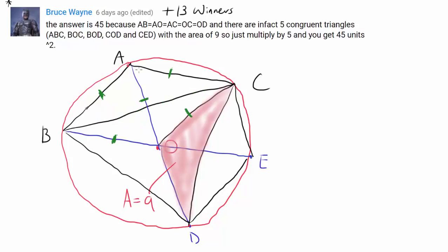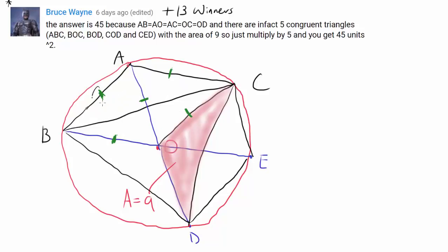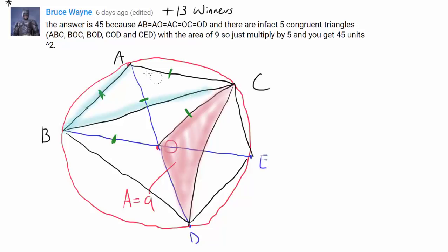Now do we have any congruent triangles? Yes. We have triangle ABC congruent to triangle OBC by SSS. They have two pairs of congruent sides, and they share side BC. So by side-side-side congruence, triangle ABC is congruent to triangle BOC. We've already found a congruence — we know these two triangles are congruent.